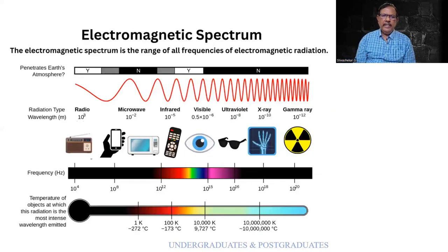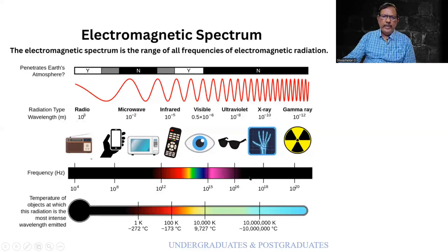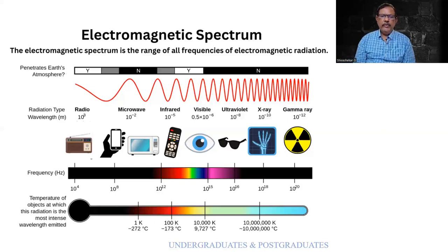There is an electromagnetic spectrum on the screen. The sources of radiation are numerous and you can very easily identify the gadgets on the screen. There is a varied frequency of electromagnetic waves, measured at different levels. They are able to penetrate the Earth's atmosphere, and as a result there is a lot of impact on humans as well as other living creatures.